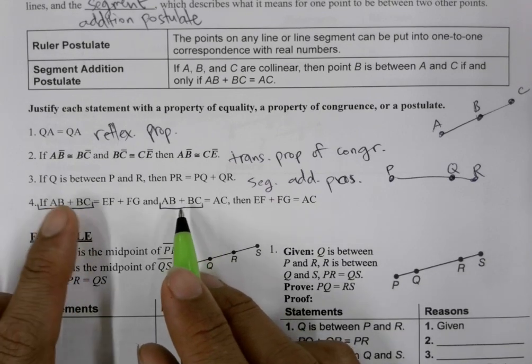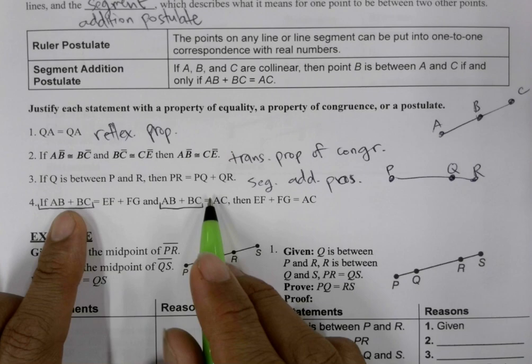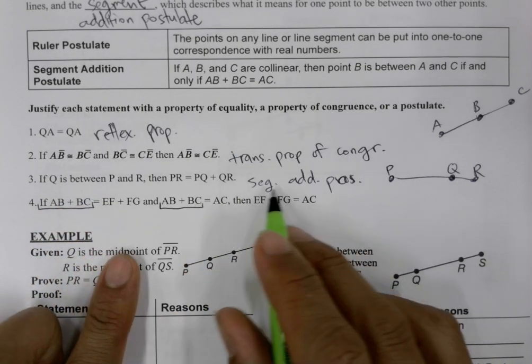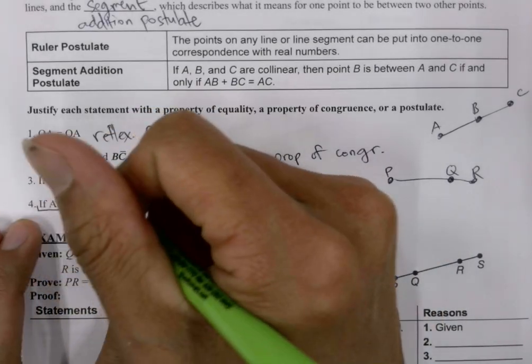We're taking this expression here and we're replacing it with what it's equal to, namely AC to get to here. So, this here would be substitution problem.